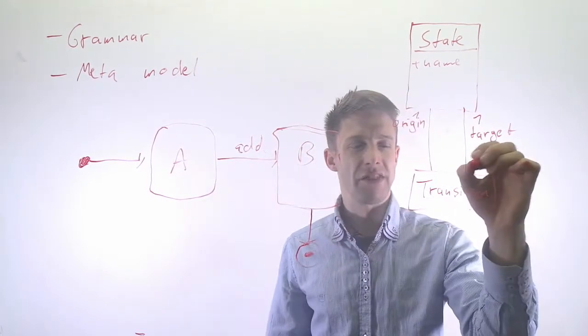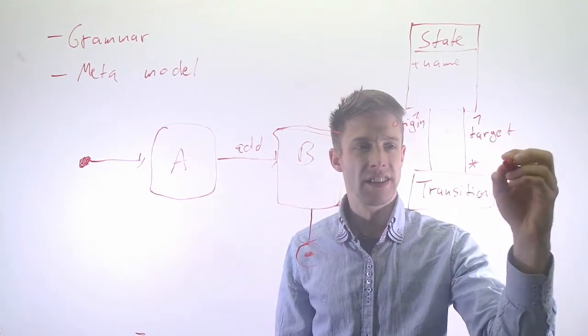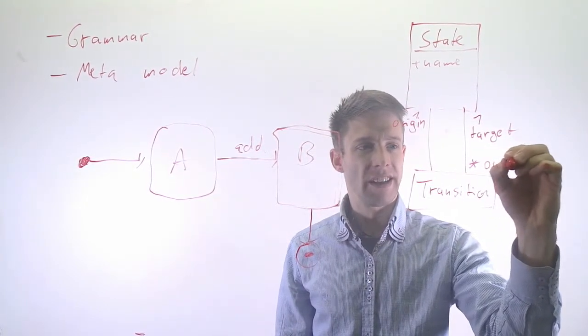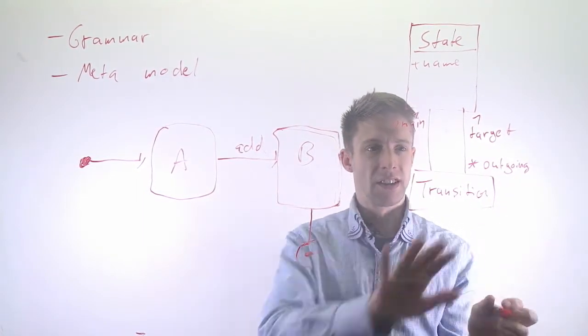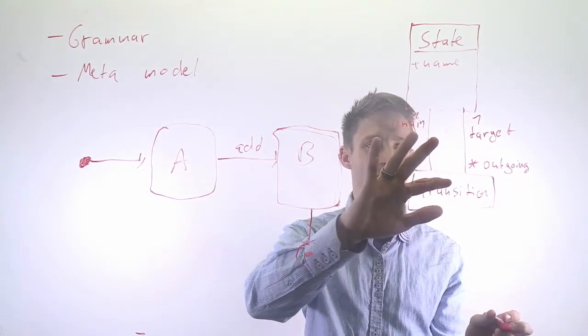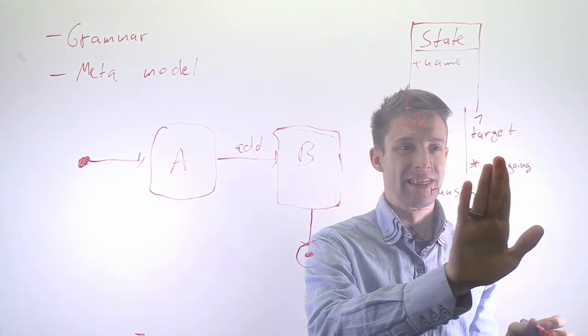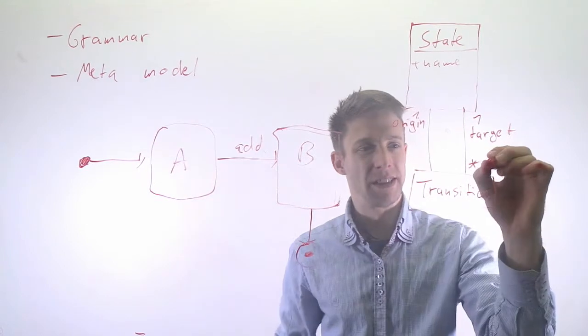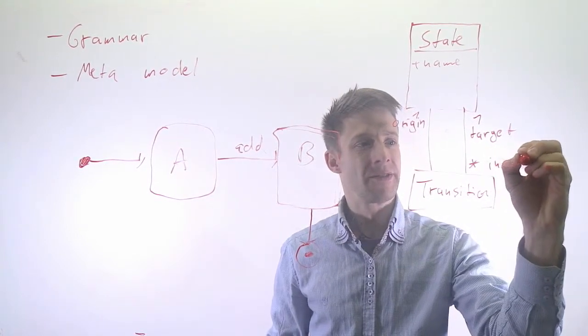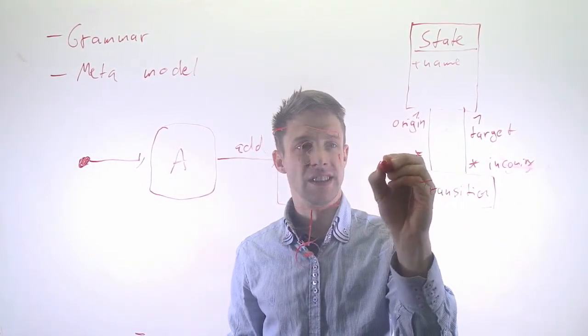And each state can have a number of outgoing, now I have to make this the right way around, this would be the incoming ones, and a number of outgoing transitions.